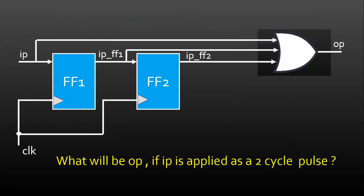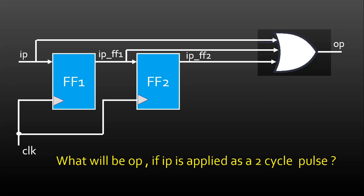Let me reveal the design, which is very simple after observing these waveforms. I simply need to put flip-flop FF1, which gives me IP_FF1 at its output. Then I feed its output to the input of second flip-flop FF2, and at the output of FF2 I get IP_FF2. Then I do an OR operation on IP, IP_FF1, and IP_FF2 to get the final output OP.